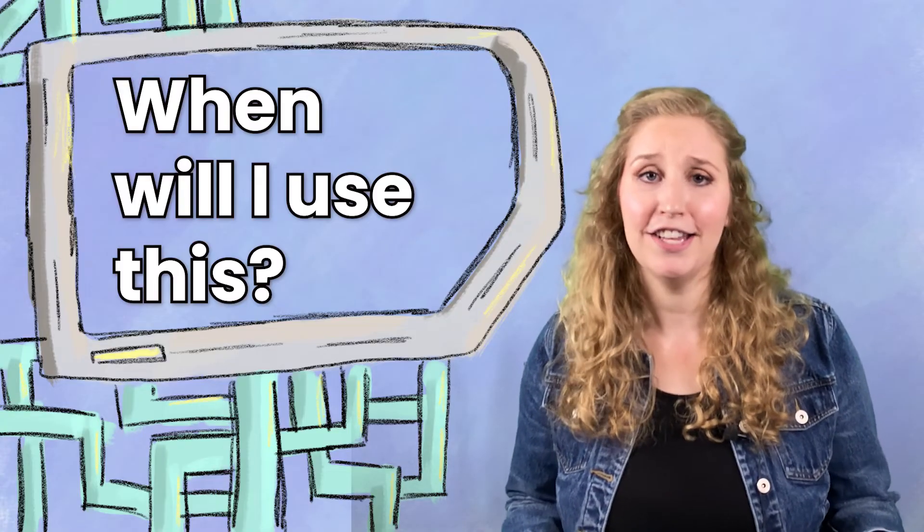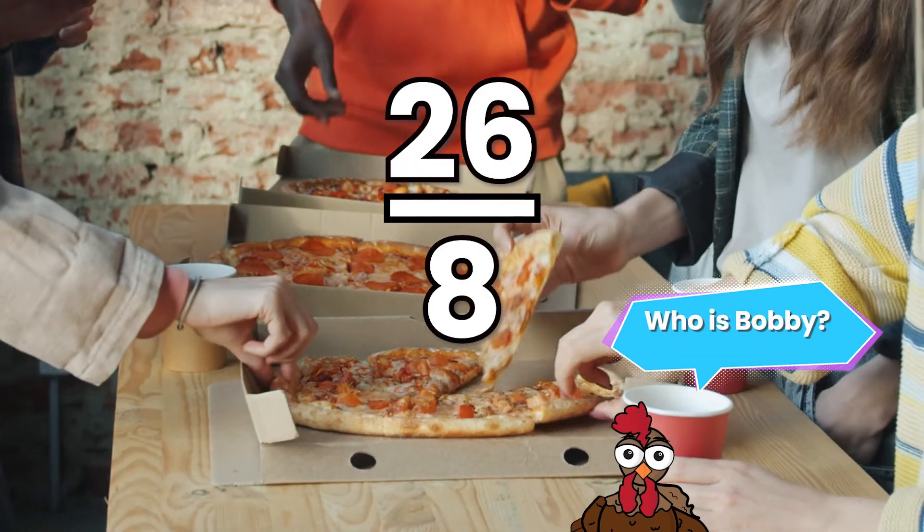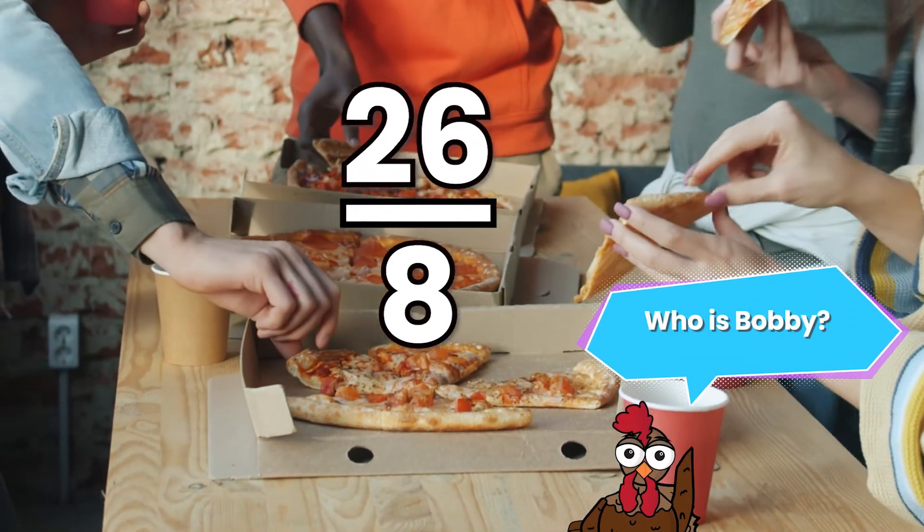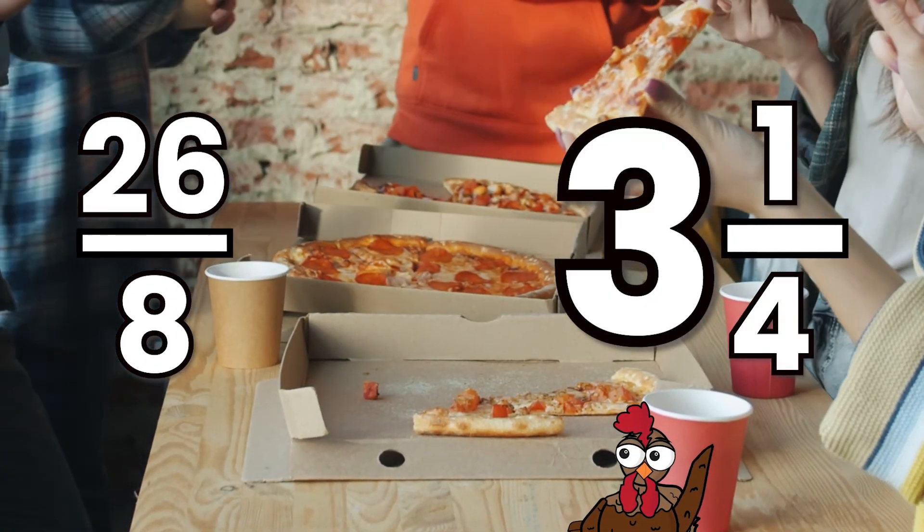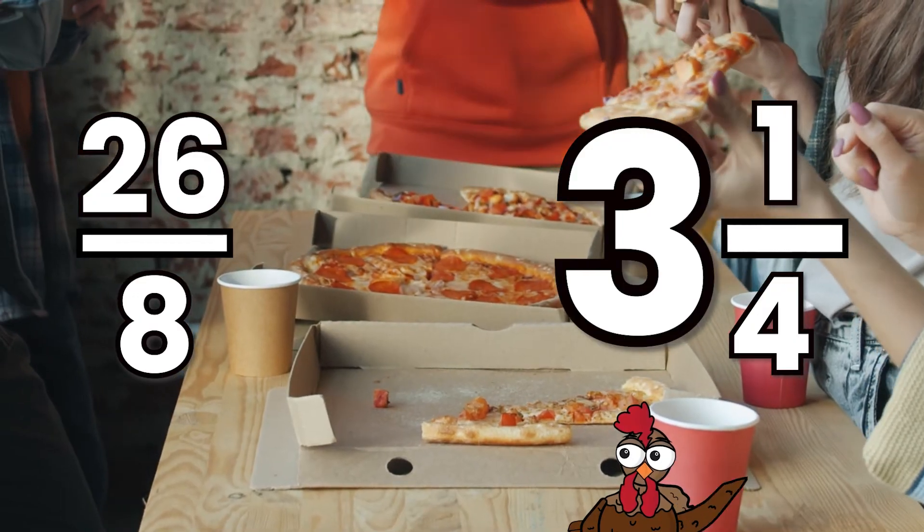Usually you're not going to say, hey Bobby, I've got 26 eighths pieces left. You're going to give him a mixed number. You're going to say, hey, I have three and one fourth pizzas. Mixed numbers are a lot easier for us to process and digest and talk about in real life.